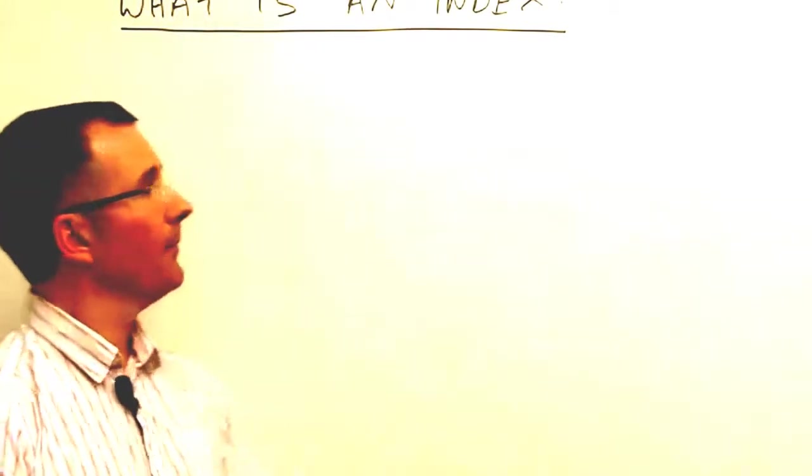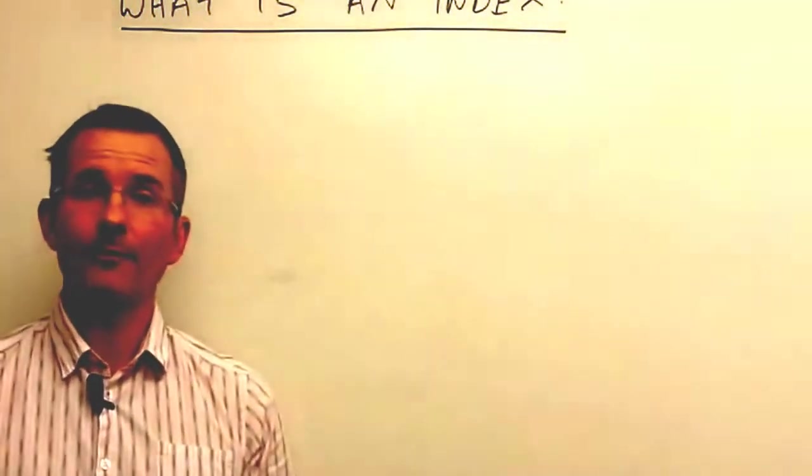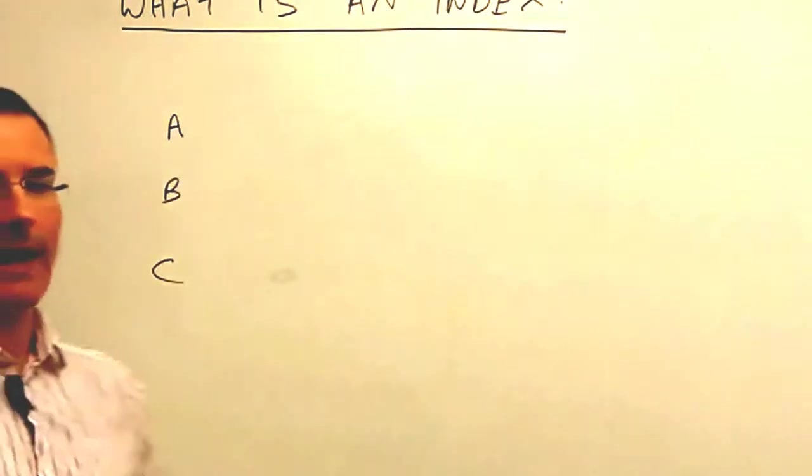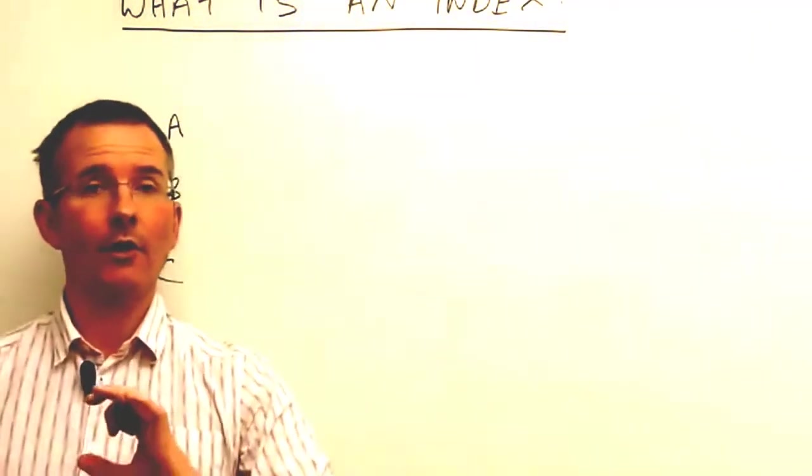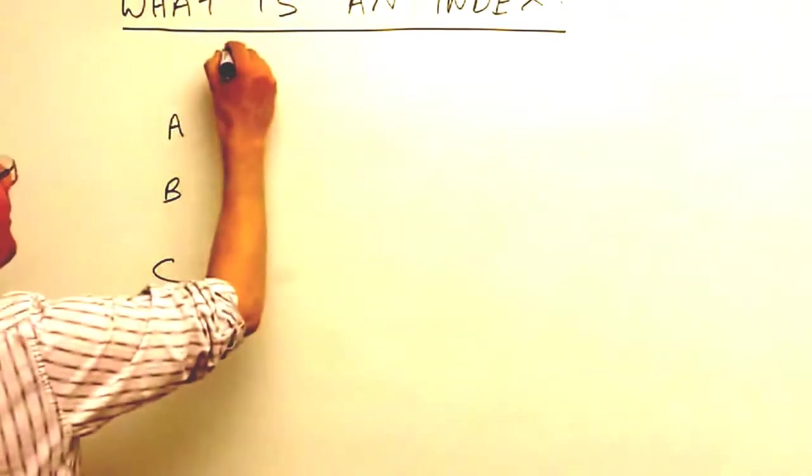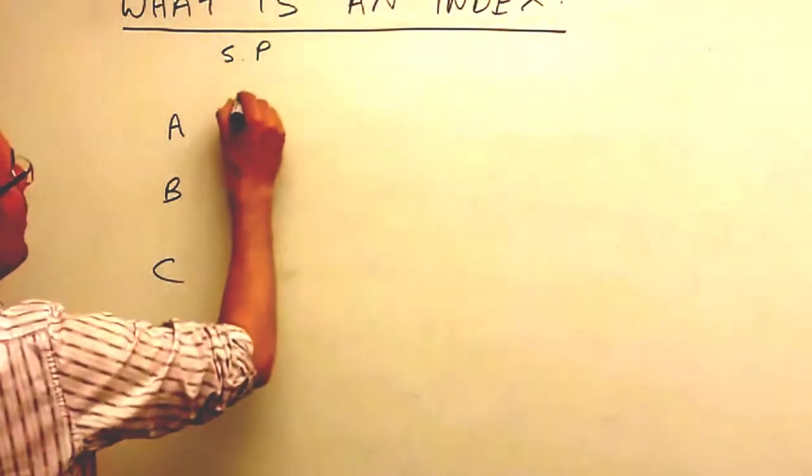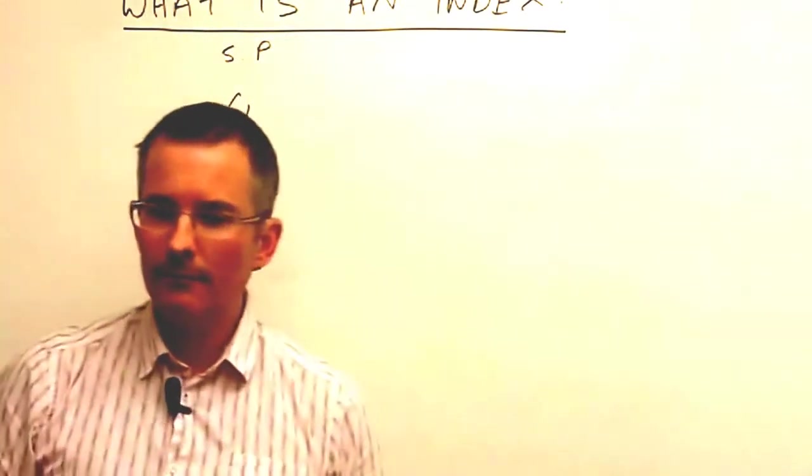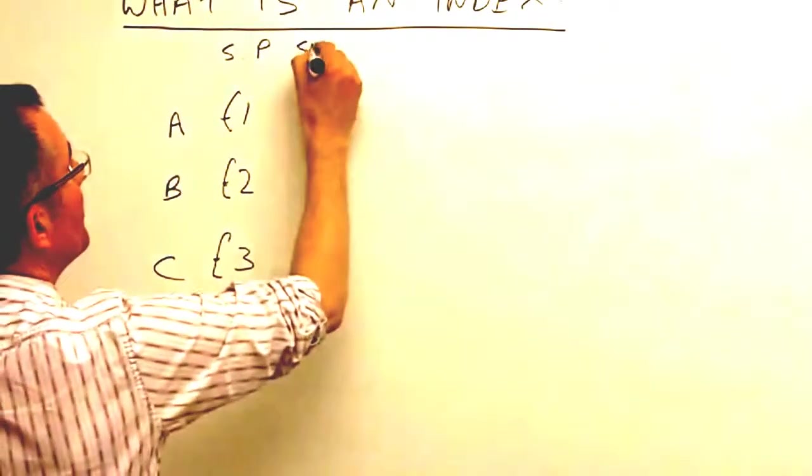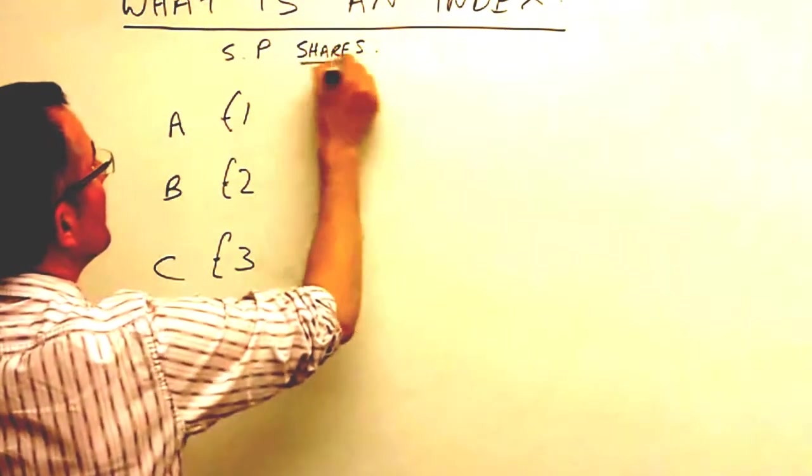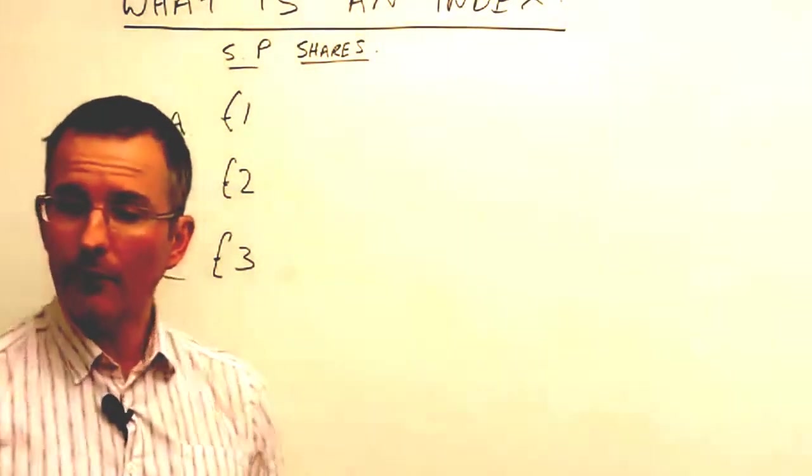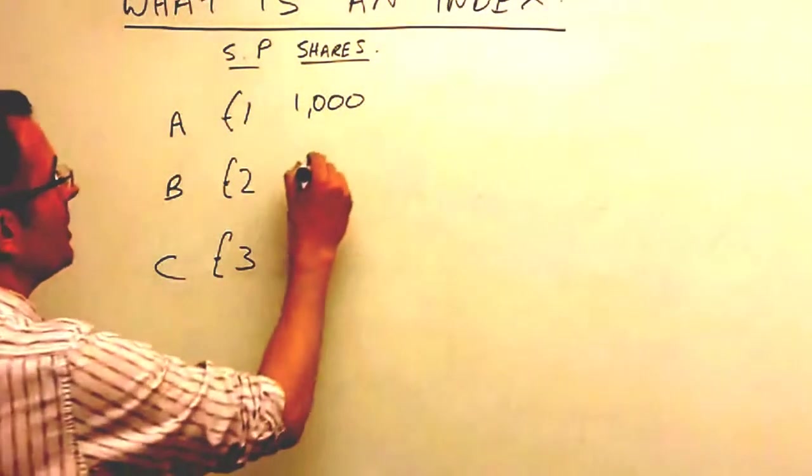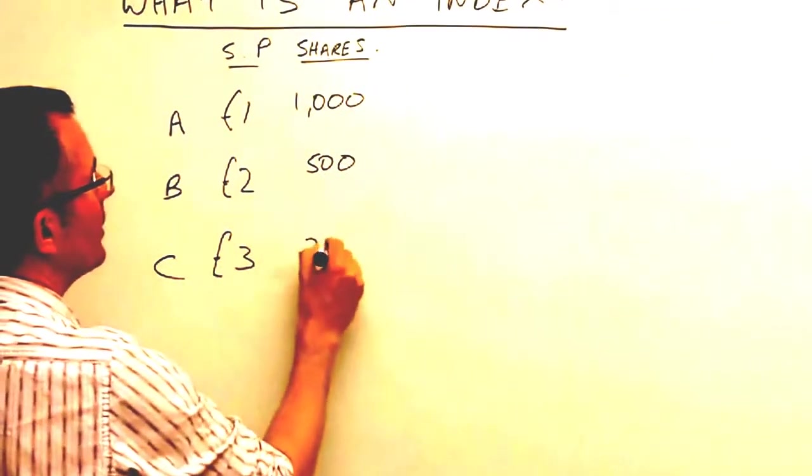Right, so to put an index together, what I need to do is find some constituents, find something to go in it. So let's have three companies simply called A, B, and C. And they are just three companies, so it's going to be an index of just three firms. And let's say basically the current share price is £1 for A, £2 for B, and £3 for C. And the number of shares each company has in issue. They are slightly different sizes, these companies. So let's say that the first company has a thousand shares in issue. Company B has 500 shares in issue. And company C just 200.